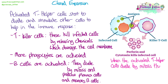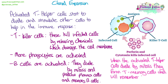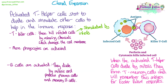T helper cells also divide by mitosis and form T memory cells, which work similarly to B memory cells. They can stay in the blood or be stored in the thymus gland, allowing them to remember that antigen and be re-stimulated quickly upon reinfection. Cytokines control all the steps of this process.